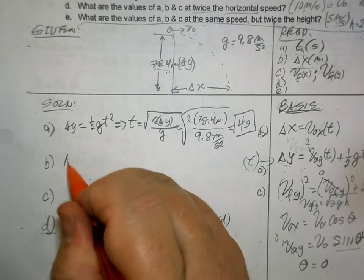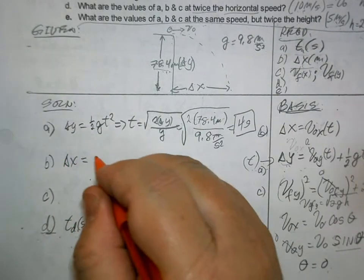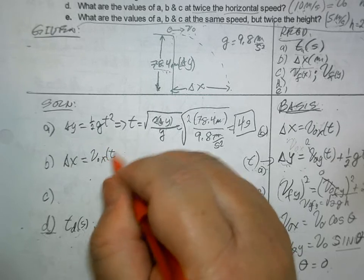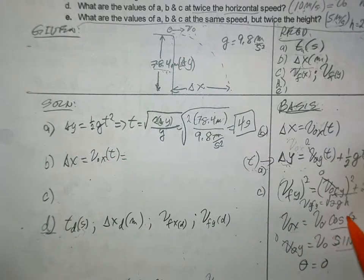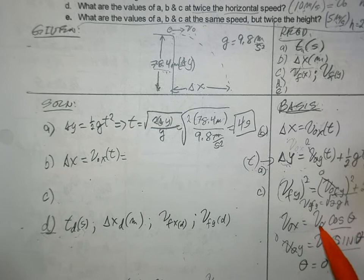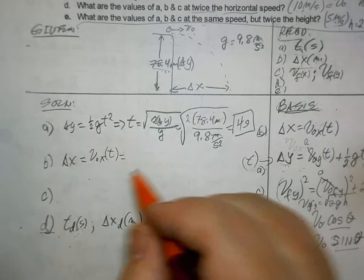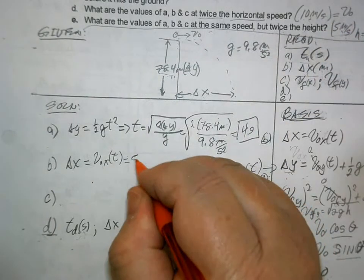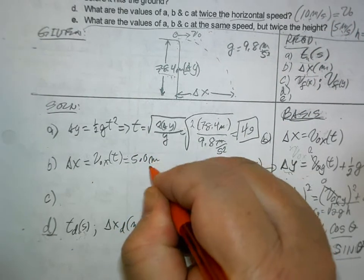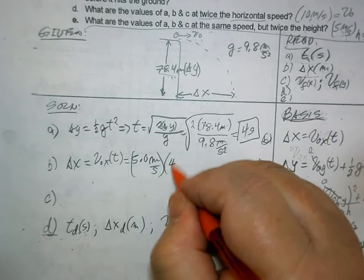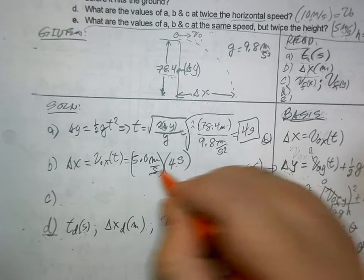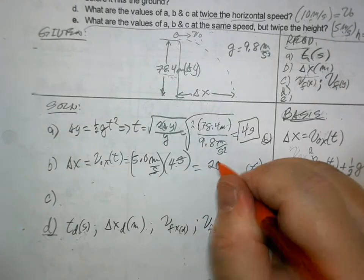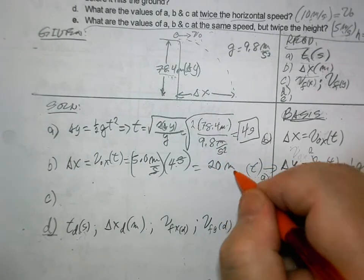The next one is delta x. v o x equals times t. Look at that. This is 1, so therefore v o equals v o x. I'm going to write that. What is our v o? It's 5.0 meters per second. What is t? 4 seconds. I don't even need a calculator. It's 20 meters.